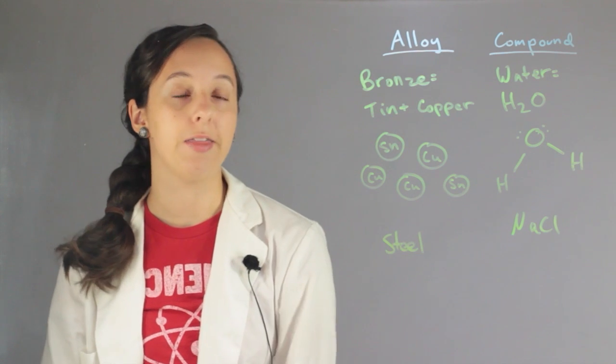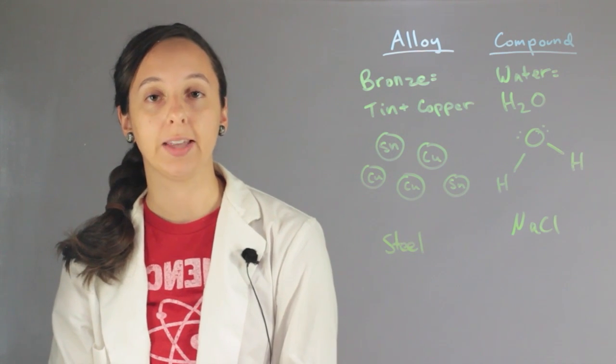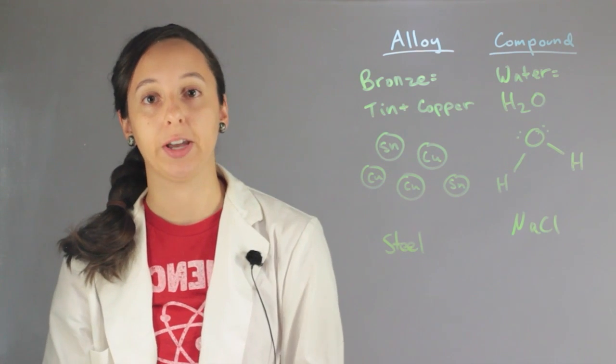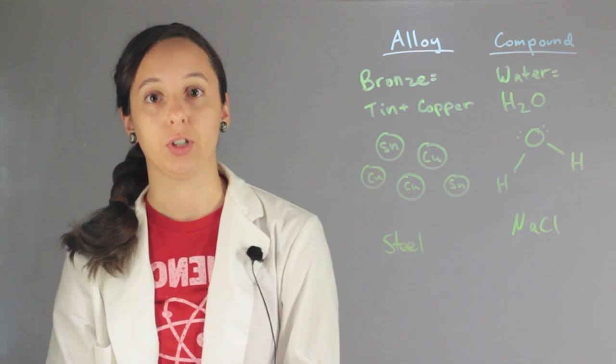And so it's good to point out that another feature of an alloy is that one of the things you're mixing has to be a metal, which means that it comes from that middle section of the periodic table, the transition metals.